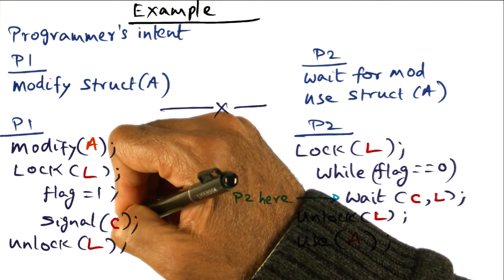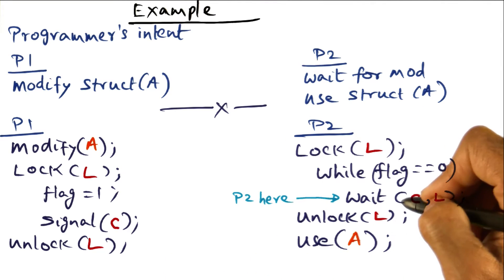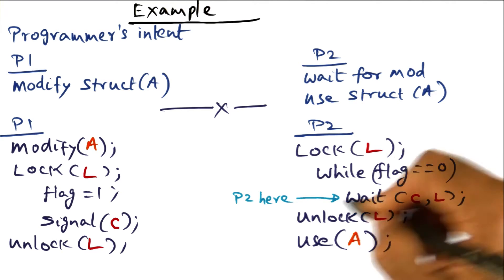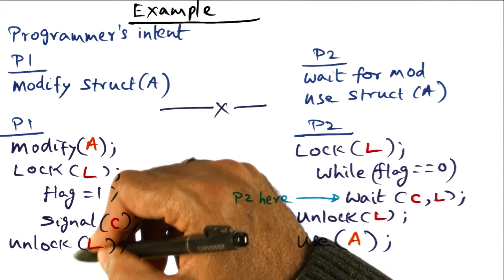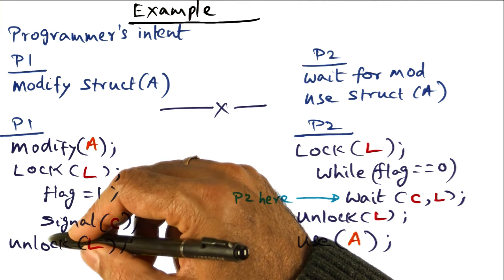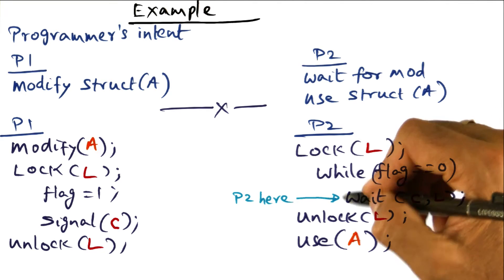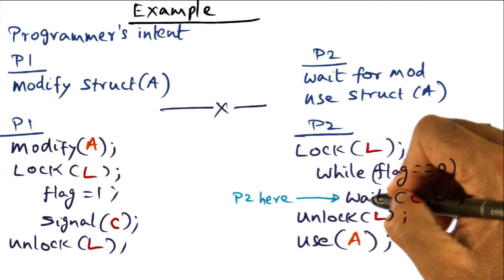You know that signaling on the condition variable is going to wake up P2, and of course it cannot start executing here until P1 has released the lock. Once the lock has been released, that lock will be acquired implicitly by the operating system on behalf of P2, because that is a semantic of this condition wait here.